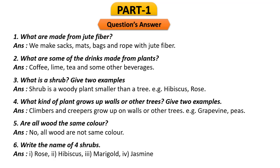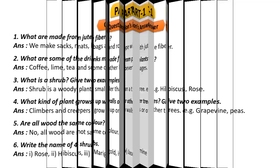Question 5: Are all woods the same color? No, all woods are not the same color — different kinds of wood have different colors. Question 6: Write the names of four shrubs. The answer is rose, hibiscus, marigold, and jasmine. These are the four names of shrubs.